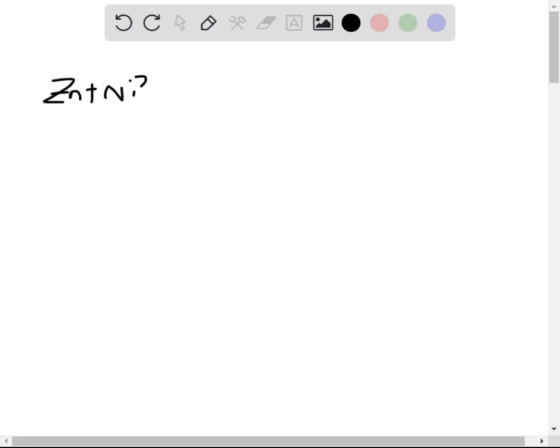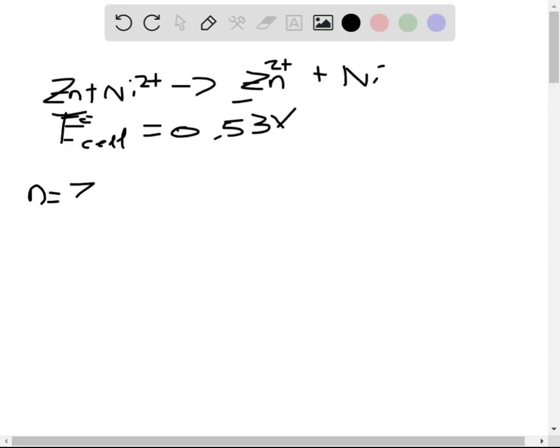So the only favorable reaction that can occur is the oxidation of zinc and the reduction of nickel. And by determining the E°cell, which can be retrieved from a table, it's equivalent to 0.53 volts. And we can see that we go from a zero oxidation state to a plus two oxidation state for zinc. So we have to transfer two moles of electrons for that process to occur.